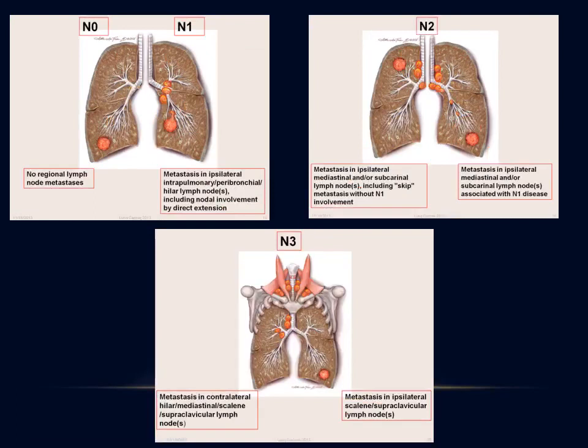For lymph node staging: N0 means no lymph node involvement; N1 means ipsilateral hilar lymph node involvement; N2 means ipsilateral hilar plus mediastinal lymph node metastasis, or skipped ipsilateral mediastinal involvement without hilar lymphadenopathy; N3 means contralateral hilar or supraclavicular lymph node adenopathy. If a patient presents with lung cancer symptoms and you palpate an enlarged supraclavicular lymph node, this is by default an N3 lesion.